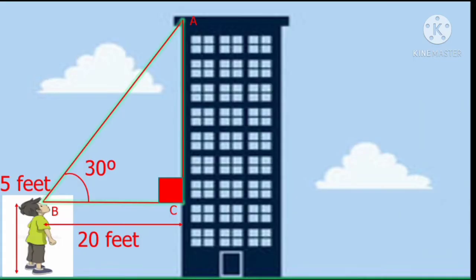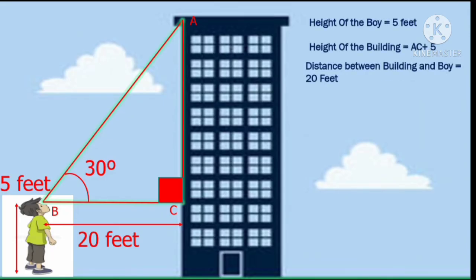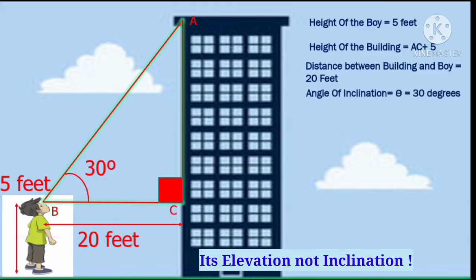Suppose you want to find the height of a nearby building and you are at a distance of 20 feet away from it. Let's suppose your height to be 5 feet. Now just look at the top of the building and note down the angle that your line of sight makes with the horizontal. Let's suppose it is 30 degrees. You're getting a right angle triangle, and wherever you have right angle triangles you can use all your trigonometry concepts.